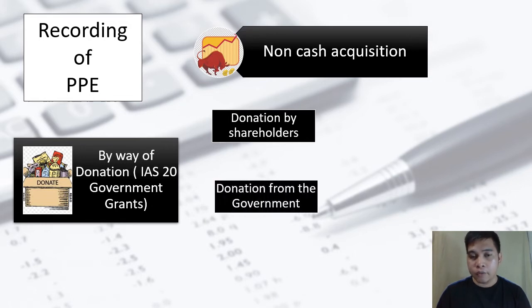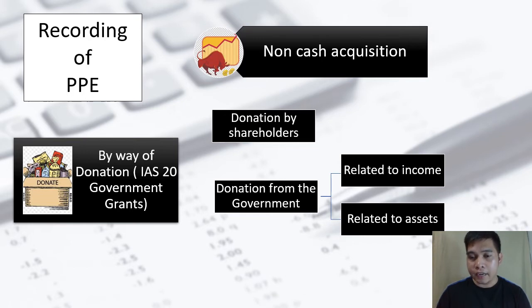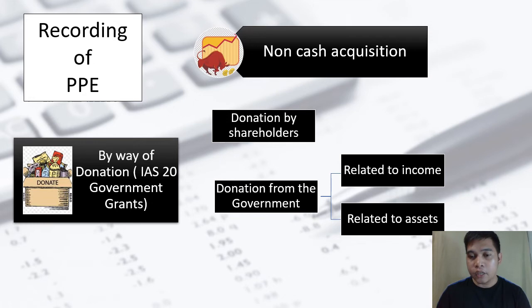However, if the donor is the government, we must follow IAS 20 on government grants. Under IAS 20, we need to identify whether the donation is related to income or related to an asset. If related to income, the government attaches conditions — for example, giving cash that must be used for environmental purposes. If related to an asset, the government gives cash or land with a condition requiring the donee to buy or construct an asset. For this video, we will focus on grants related to assets, since our topic is property, plant and equipment.